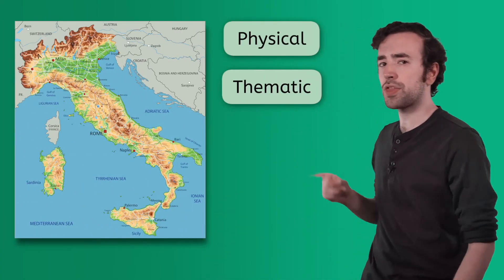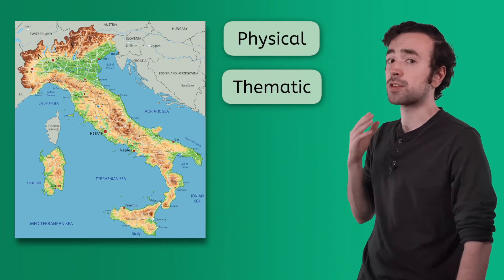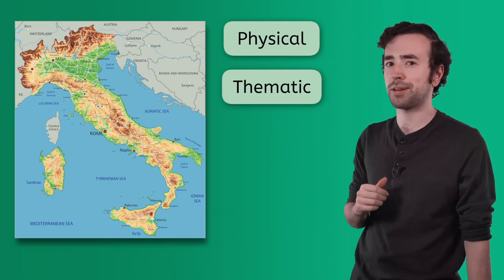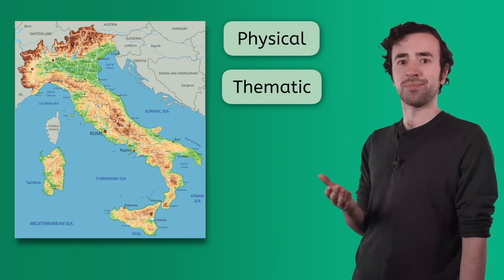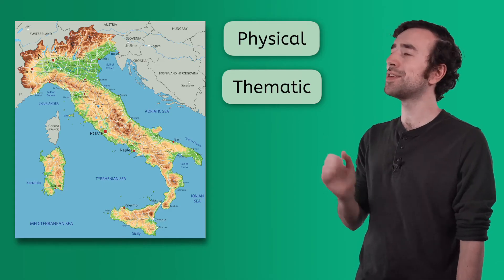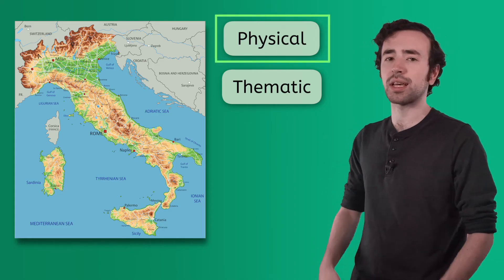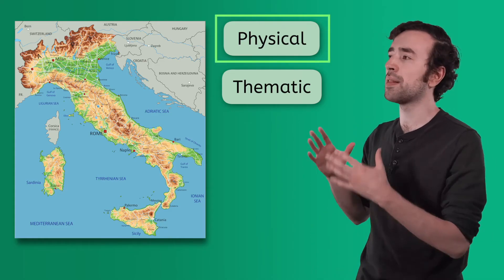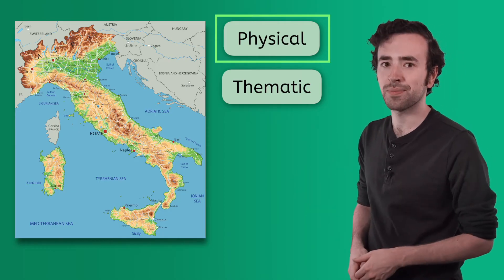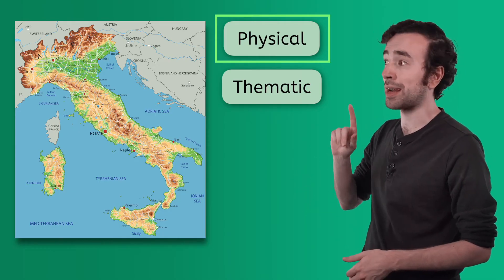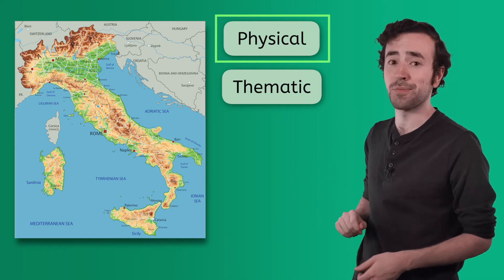I think it's time for a little quiz. Can you tell whether this map is physical or thematic? That's right, it's physical. We can see the colors that tell us about the landscape in Italy. All that brown shows us that there are a lot of mountains there.